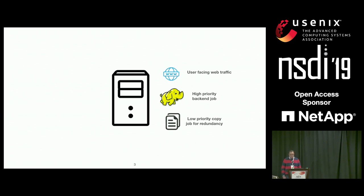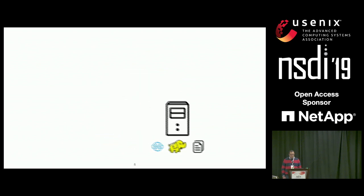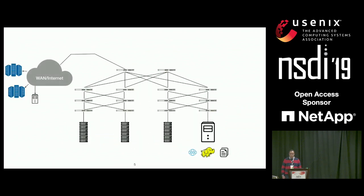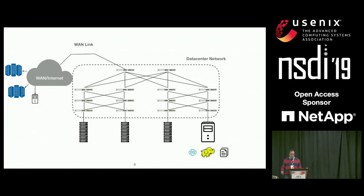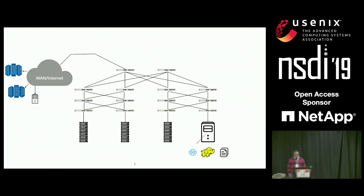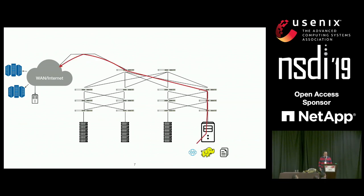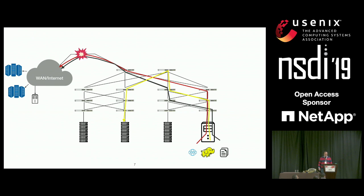The way this fits in current networks is something like this, where the server is connected to other machines in the data center network, and the data center is connected to the rest of the world through WANs. Traffic will flow such that web traffic goes through the WAN to the internet, back-end traffic goes to other machines in the data center, and copy traffic also goes through the WAN to other data centers. This can cause multiple congestion and conflicts in the network — in the WAN, at the source, and in the data center LAN.